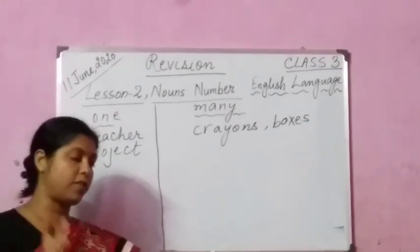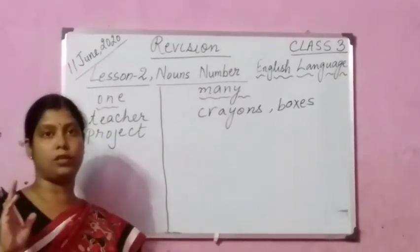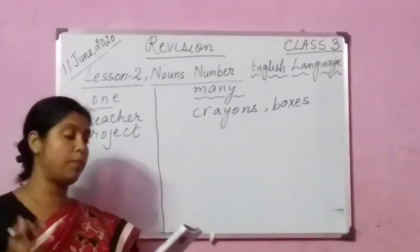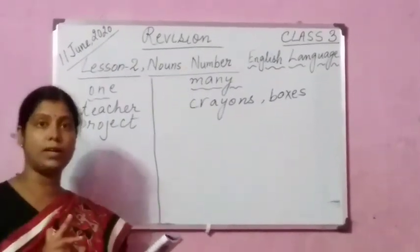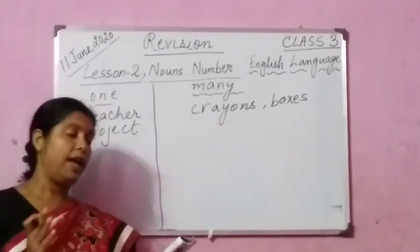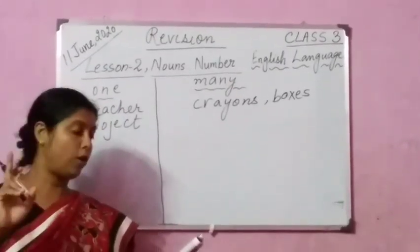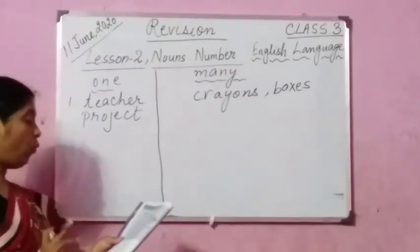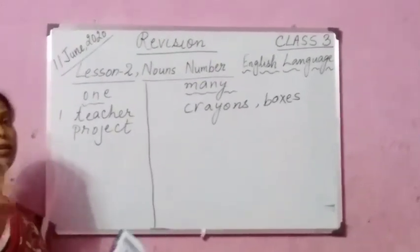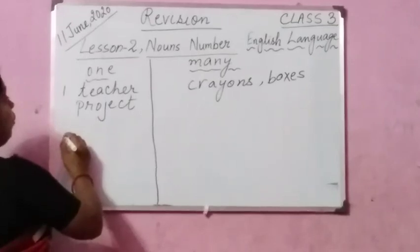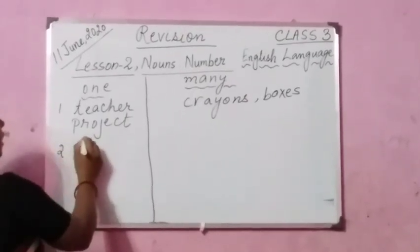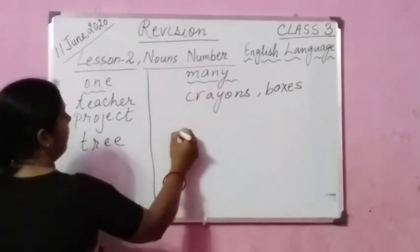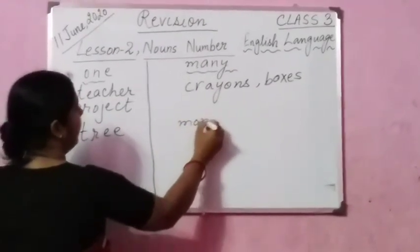The teacher asks us to get crayons and boxes for the project. Teacher and project are singular; both crayons and boxes are many. Number 2: we saw a few monkeys on a tree. Tree is one, but monkeys are many.